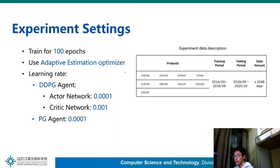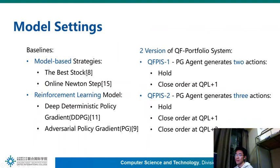For the experimental settings, I have trained two agents for 100 epochs, with 9 products in the portfolio. To compare the performance of our system with previous methods, we selected two model-based strategies and two reinforcement learning models as baselines. We implemented two versions of our system: in the first version, the policy gradient agent generates two actions — holding and closing orders at QPL1. In the advanced version, the PG agent can generate one more action: closing the order at QPL2.